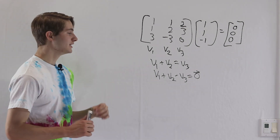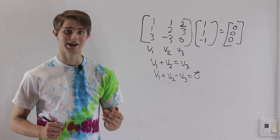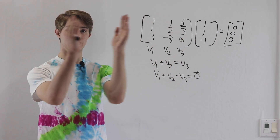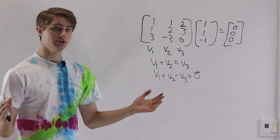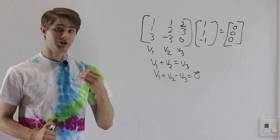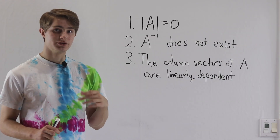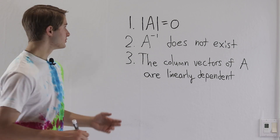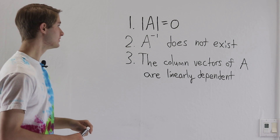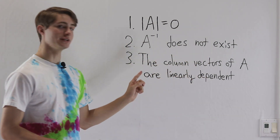Geometrically, a 3x3 determinant is looking at volumes, just like a 2x2 determinant looks at areas. So if the determinant is zero, rather than the area getting squished onto a one-dimensional line, the 3D volume gets squished onto a two-dimensional plane. And when we have three vectors on a plane, there's always going to be a way to add them together and get to zero. So now we know that for any square matrix A, these three statements are equivalent: the determinant of A equals zero, A-inverse does not exist, and the column vectors of A are linearly dependent.